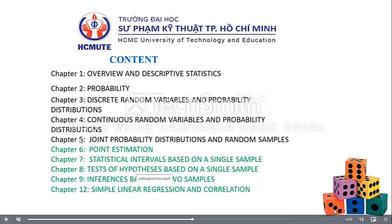When we finish Chapter 4, we have Test 1 — the midterm test. Then after that, chapters 6 to 12 will be covered in Test 2 about statistics. So we have 2 tests total, and both will be written tests (tự luận).